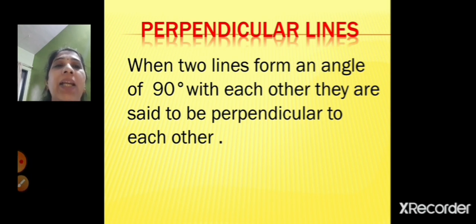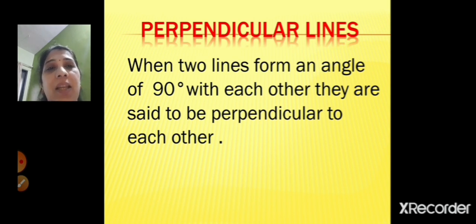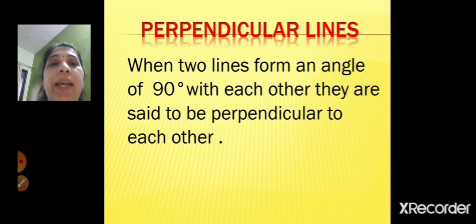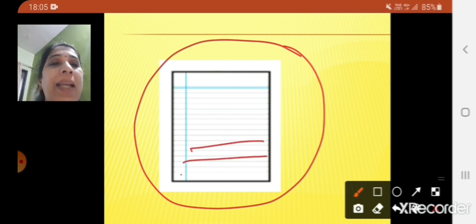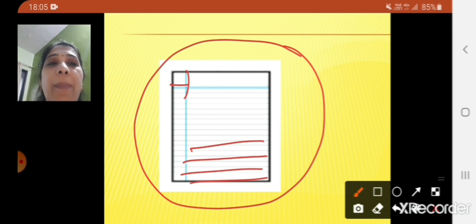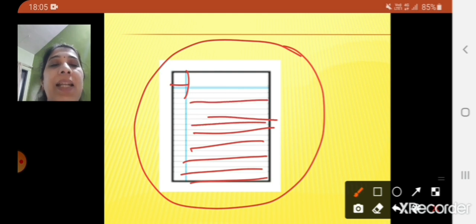The definition of perpendicular lines: when two lines form an angle of 90 degree with each other, they are said to be perpendicular to each other. Now you can see the page of a notebook — the horizontal ruled lines are your parallel lines, and the side edge of the notebook is your perpendicular line.